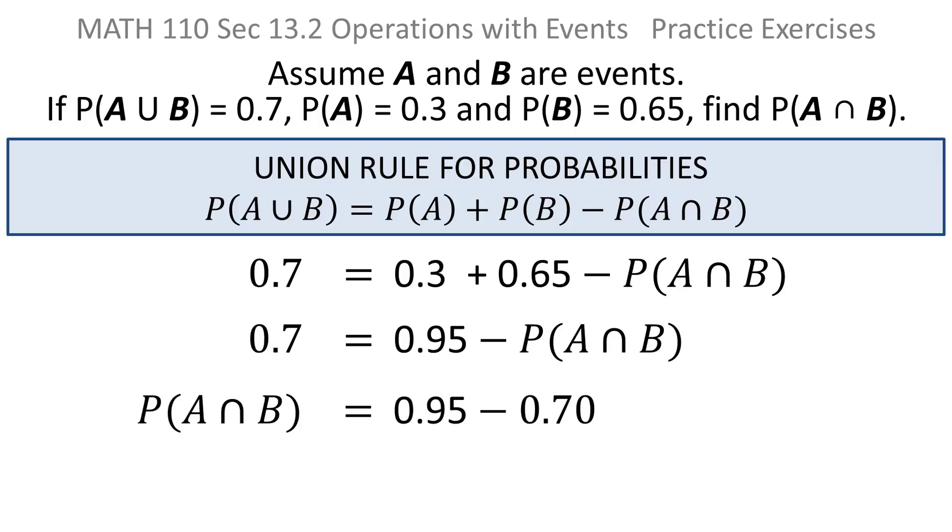And then if you move the probability you're solving for to the other side, it makes it positive and then take the 0.7 to the other side making it negative. You'll get the probability of A intersect B is 0.95 minus 0.70, which of course is 0.25.